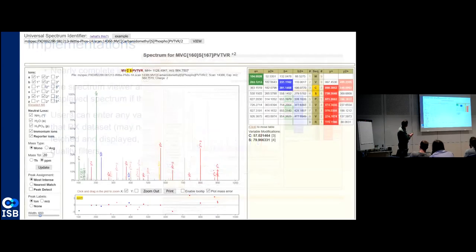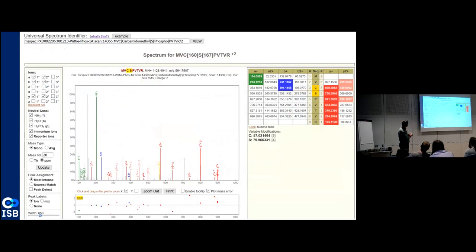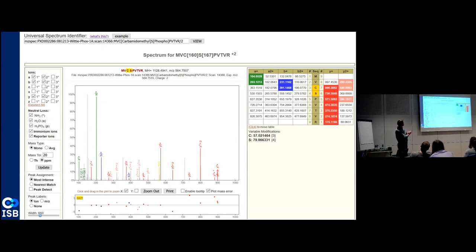Here it's zoomed in — actually this is a different spectrum, and now you can actually read it. Here it is: PXD 2286, originally deposited at Pride, which we downloaded and reprocessed. Here is the MS-run name, the scan number, and here is our interpretation. We came to this spectrum by browsing the Peptide Atlas repository — looking at a certain protein, a certain phosphorylated peptide. In Peptide Atlas, you can view any of the spectra in the resource. When you bring up the spectrum viewer, it fills in the universal spectrum identifier for that spectrum.